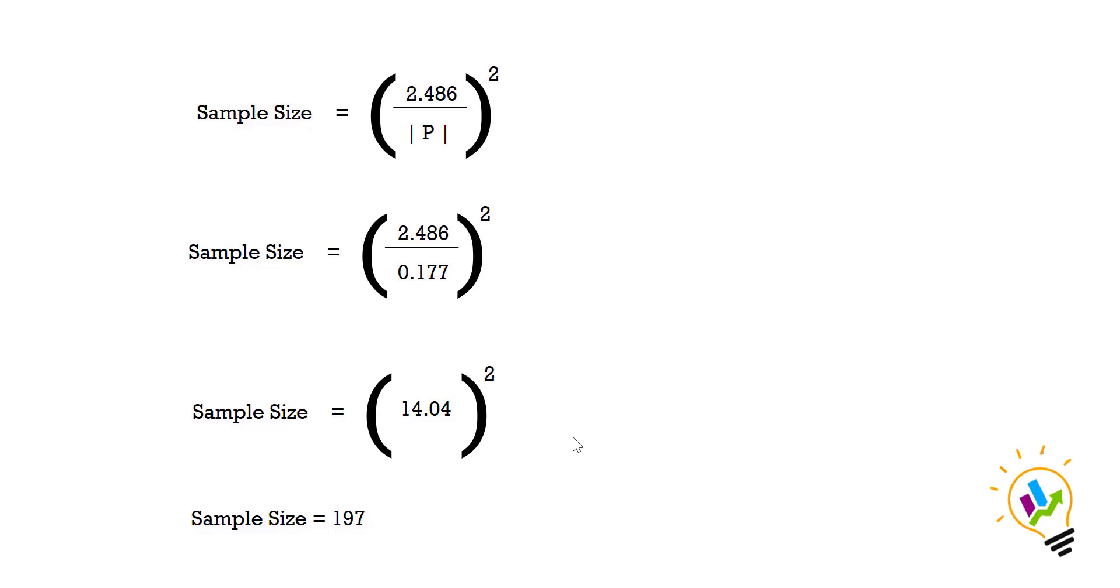So this is the minimum sample size required for this model. This is very easy to calculate. The disadvantage is after we collect the data, after the analysis is done, we are getting the minimum path coefficient value. Then only we are able to calculate the sample size. It's only for confirming whether the sample we got is adequate or not.